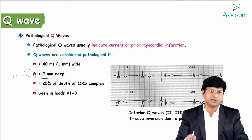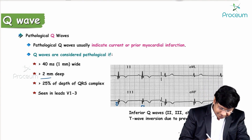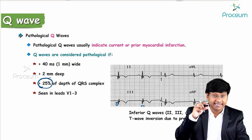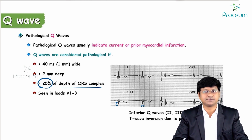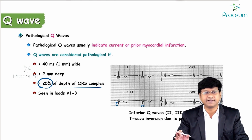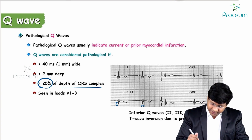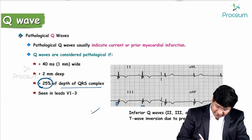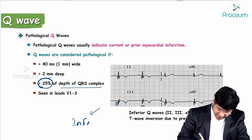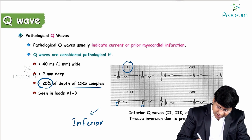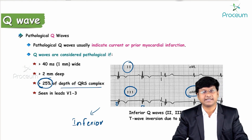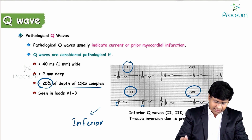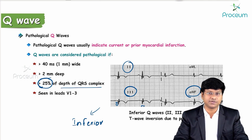The depth of the Q wave should be more than 25% of the depth of the QRS complex. In this ECG, the pathological Q waves are present in the inferior leads — leads II, III, and AVF — which are considered the inferior leads.